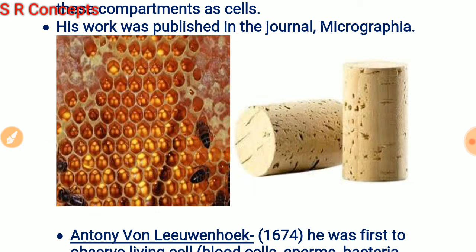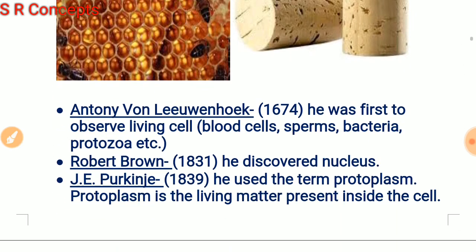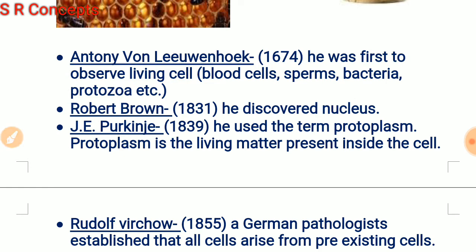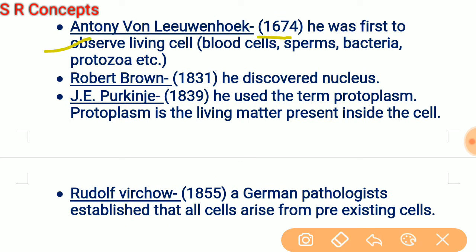An important point to note is that the cork was obtained from the dead bark of the tree, so the cells observed by Robert Hooke were dead cells. The question then arises: who discovered the living cells? It was Antony van Leeuwenhoek in 1674. He was the first to observe living cells like blood cells, sperm cells, bacteria, and protozoa. Because these were the first living cells ever observed, he called them 'animalcules.'